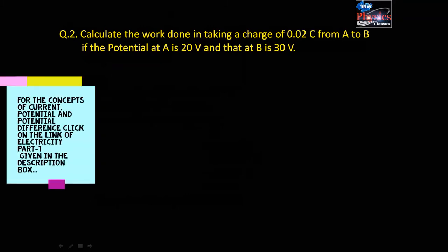Question number 2: Calculate the work done in taking a charge of 0.02 coulomb from A to B, if the potential at A is 20 volt and that at B is 30 volt.